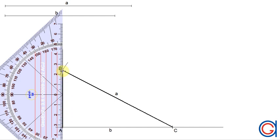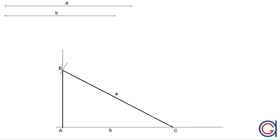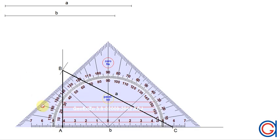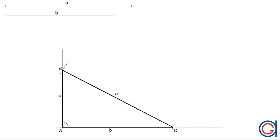Opposite vertex A we have side A which is in lower case and our vertexes are in capital letters. Opposite our vertex C is our side C in lower case and opposite vertex B we have our side B which is also in lower case. Sides are always in lower case and vertexes in capital letters.